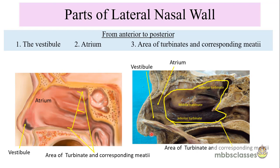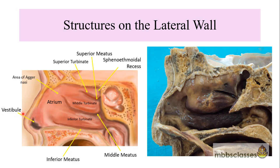In the cadaveric dissection sagittal section, this is the area of the vestibule, this area is the atrium, and the three turbinates. The vestibule is identified by the presence of hairs and this area is lined by the skin. Just behind the vestibule lies the atrium. This atrium of the lateral wall of the nose is lined by the mucosa and it is devoid of any important prominent structures.